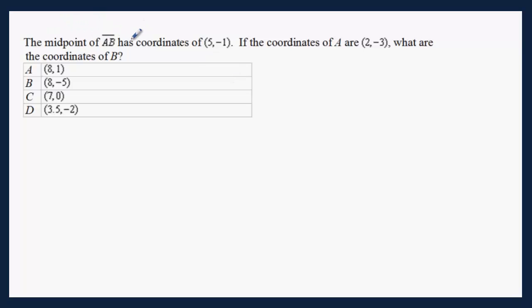The midpoint of AB has coordinates of (5, -1). If you have A here and B here, this is A, this is B, the midpoint is (5, -1). If the coordinates of A are (2, -3), what are the coordinates of B?